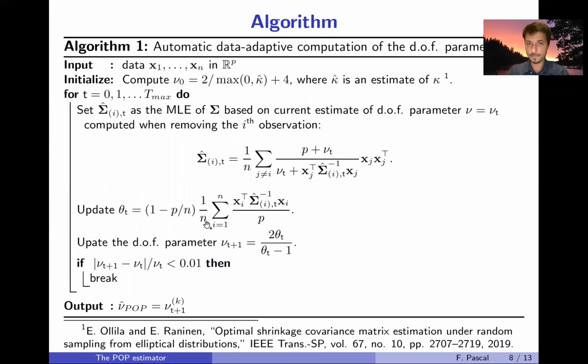Then we compute the M-estimator of the scatter matrix, the one in which we removed the i-th observation. And then we update the theta parameter to update at the end the degrees of freedom. We use this stopping criteria and the output is the proposed estimator. Of course we can compute in the same time the scatter matrix.